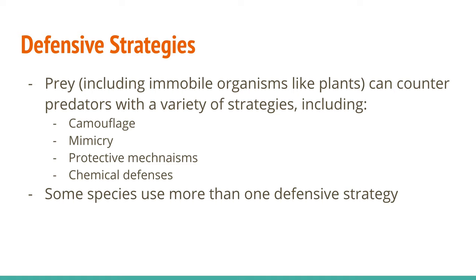When we talk about predation, we also have to talk about the various defensive strategies that prey can use. We've got four main categories of defensive strategies, and even things that are immobile, like plants and funguses, can use these strategies as well — they just use them in different ways. The four main ones are camouflage, mimicry, protective mechanisms, and chemical defenses.